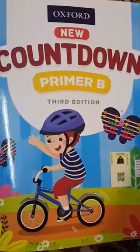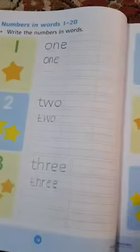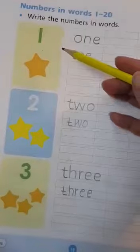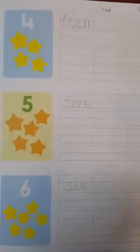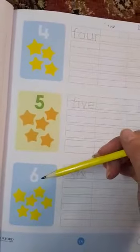As-salamu alaykum students, welcome back to lesson 32 from our maths book. So dear students, in previous video we learned the spelling from 1 to 3. But in today's video we will be learning spelling from 4 to 6.